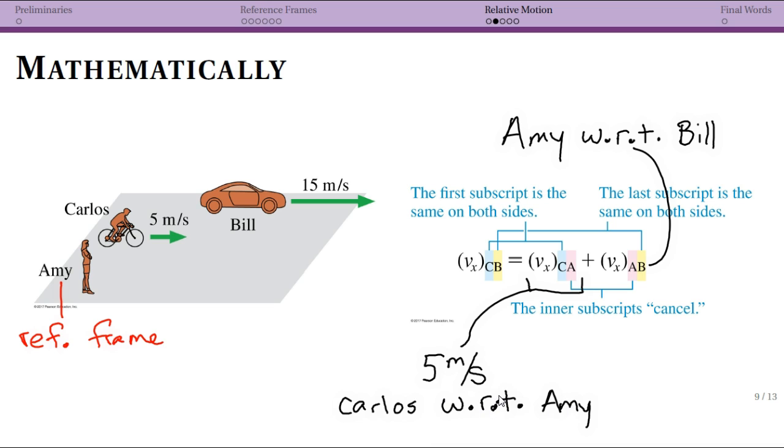So when we say vCA, this is Carlos with respect to Amy. WRT is a common abbreviation for with respect to. So this is the velocity, and in this case we're talking about one dimension. So this is our x direction, so we're only worried about one dimension right now. Carlos with respect to Amy is traveling at five meters per second, right? And that's in the positive direction.